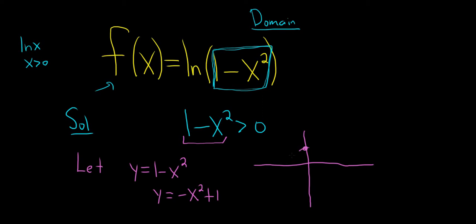So if you were to graph it, it would look something like this. And this is a 1, this is a 1, and this is a negative 1. And the question really is when is y positive? So for what values of x is y positive?